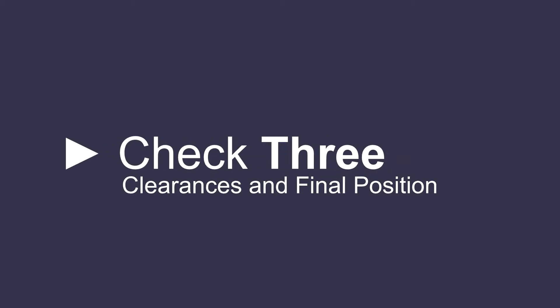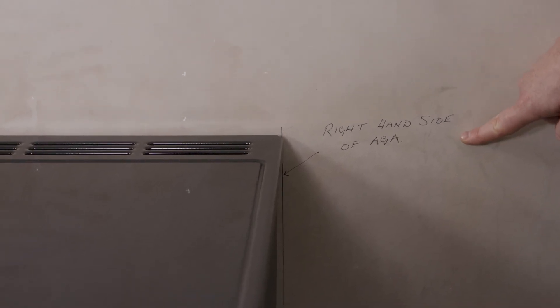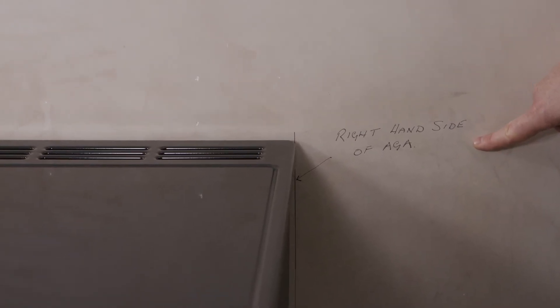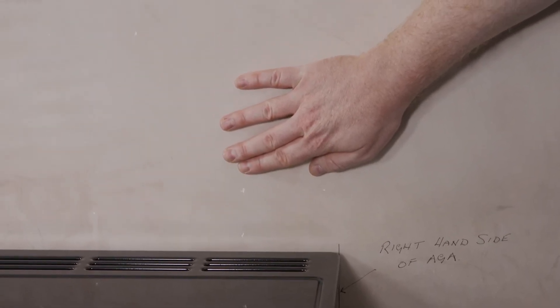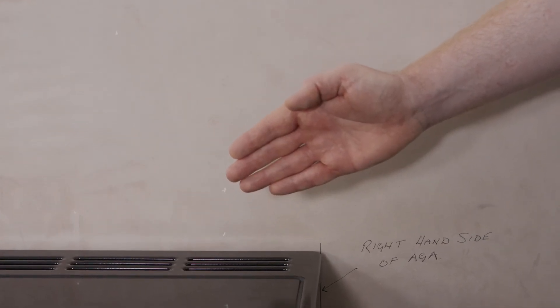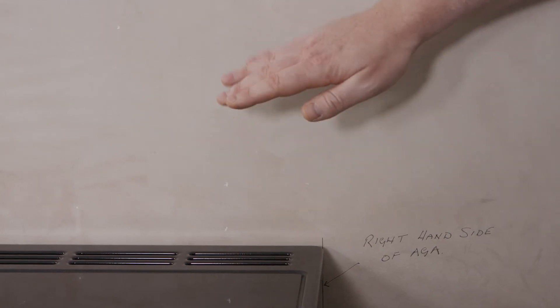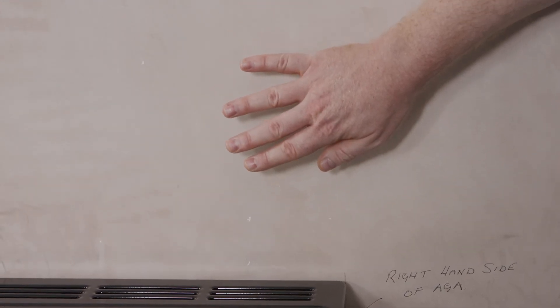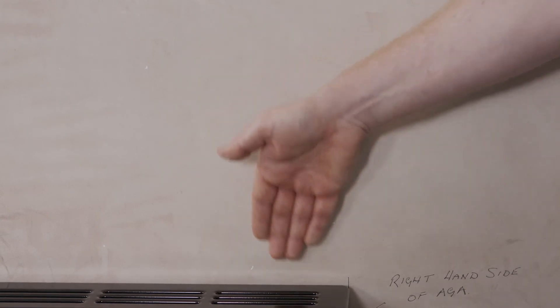Check 3: Clearances and final position. On the day of delivery, the team will need to know precisely where to site your cooker. Where the wall above the cooker will have a different finish to the surface behind, ensure the cooker is placed far enough forward to allow that work to be completed, such as a splash back or tiles. For example, with this cooker we will be fitting tiles above following its final connection and therefore need to leave a suitable gap.